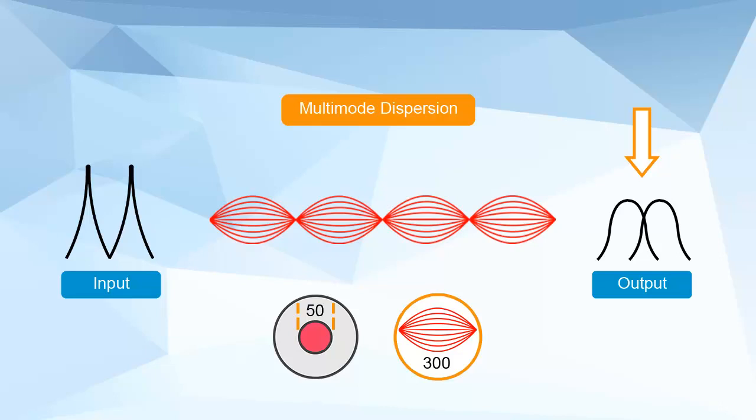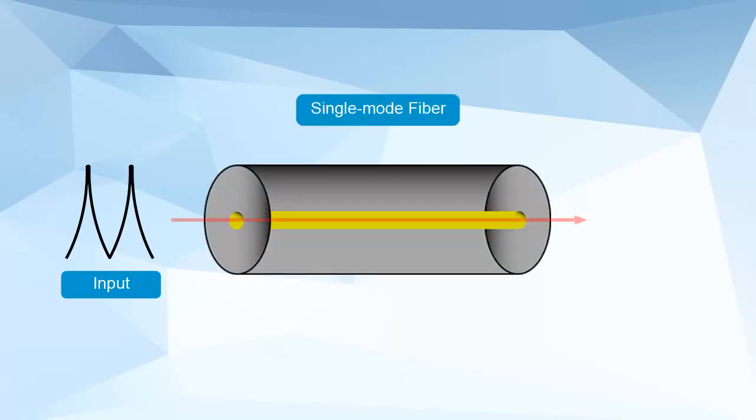Eventually, two pulses will merge together and cannot then be distinguished from each other. A single-mode fiber does not have modal dispersion since only one mode will be propagated through the fiber.